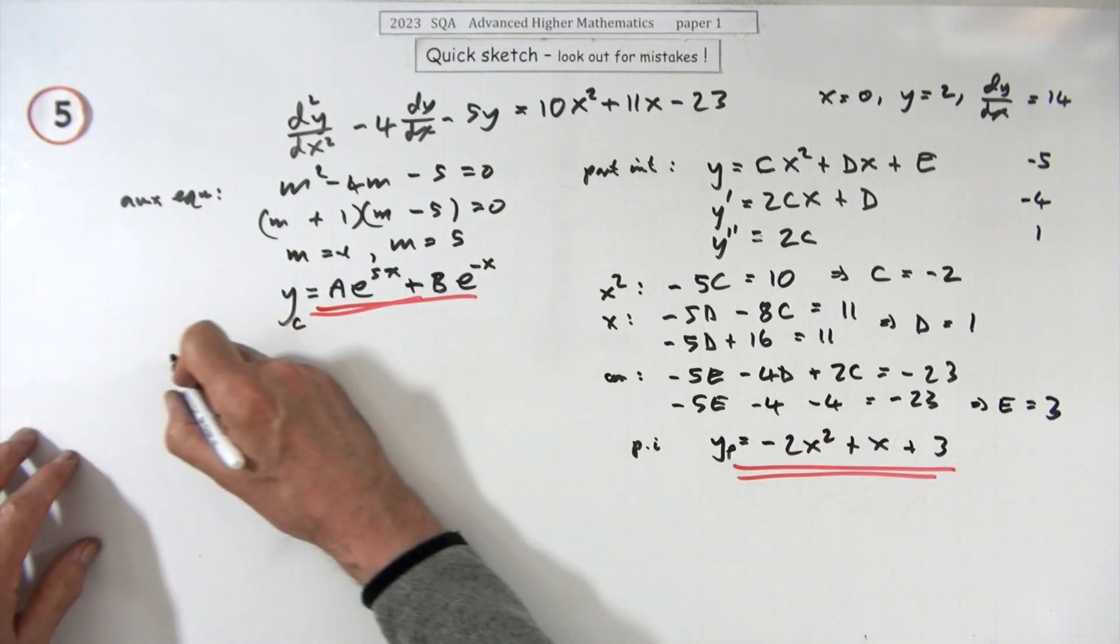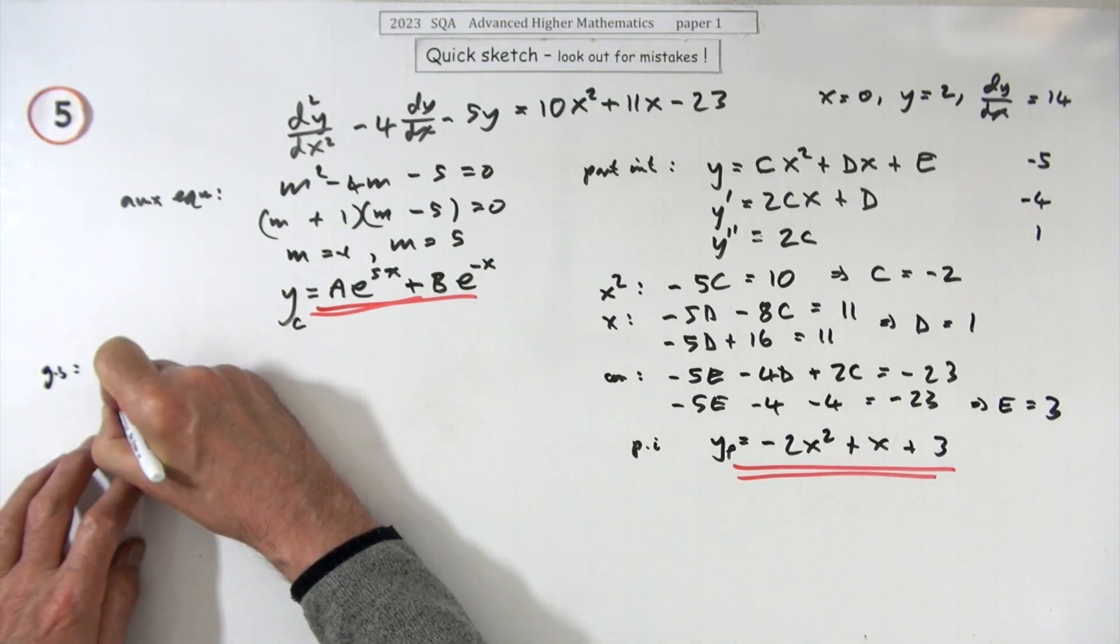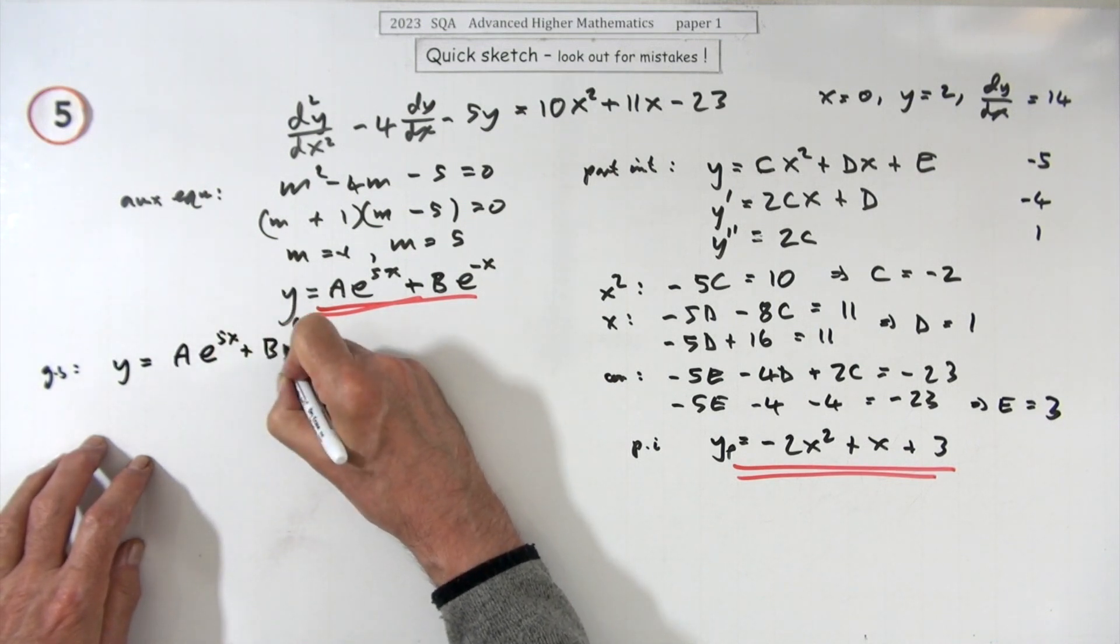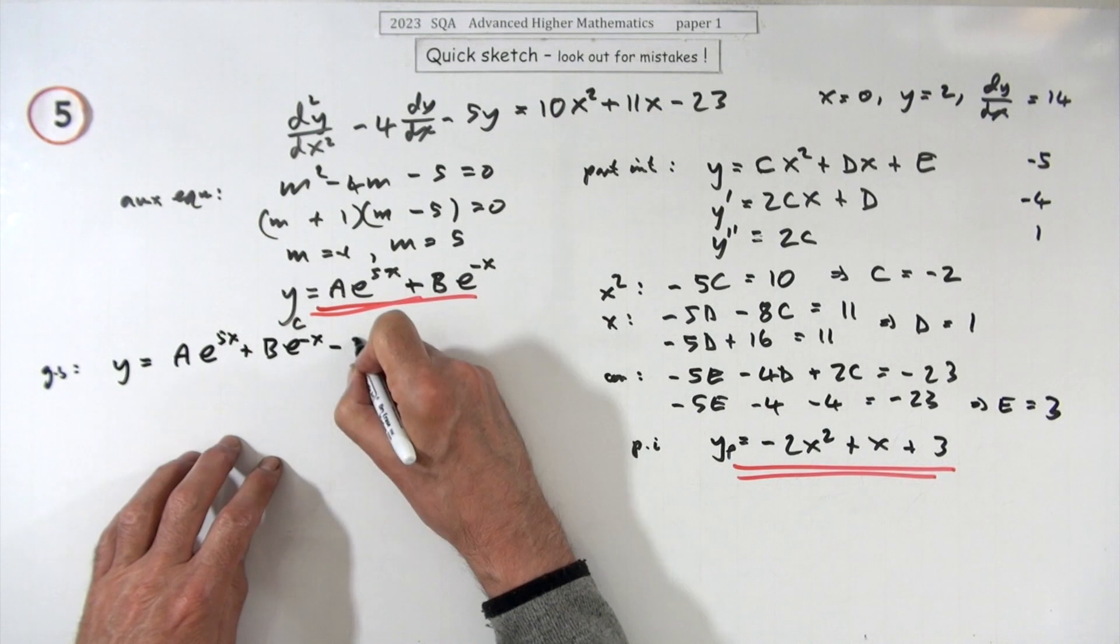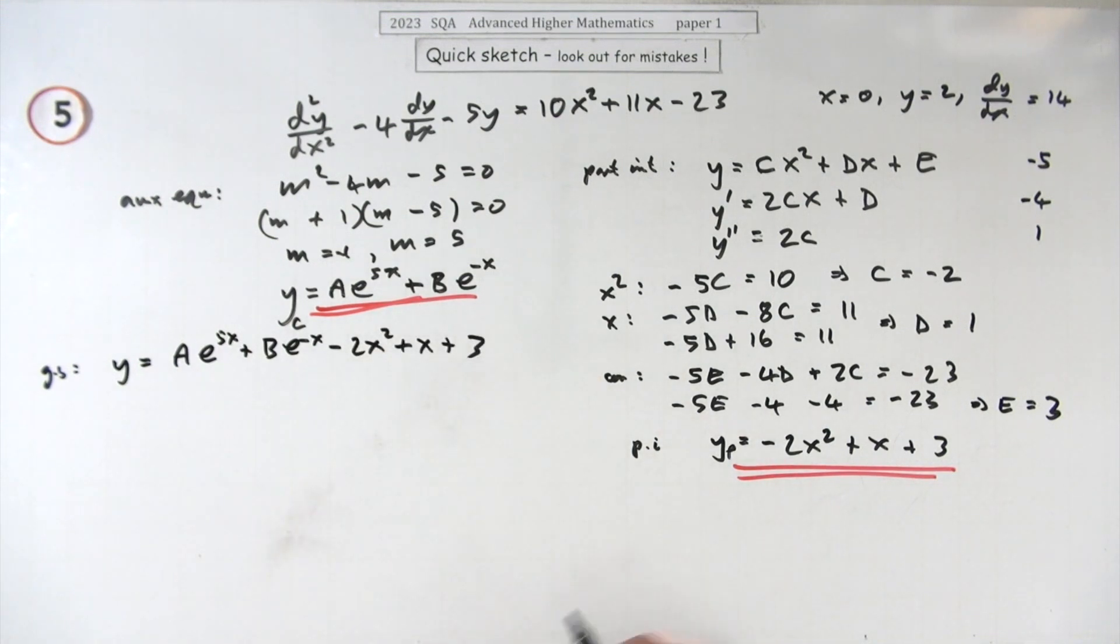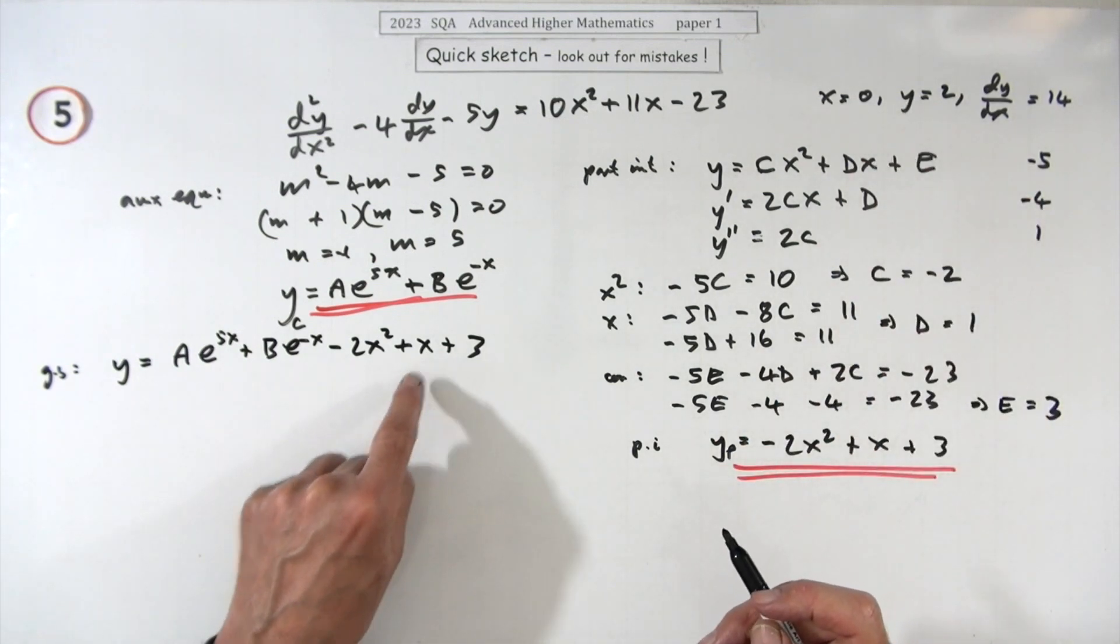Right, now putting it all together to get the general solution. We'll just put these two parts, so the general solution is y equals a e to the 5x plus b e to the negative x minus 2x squared plus x plus 3. Now you can start popping in these initial conditions when x is 0.